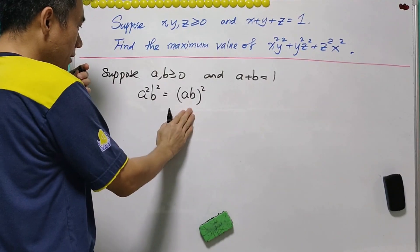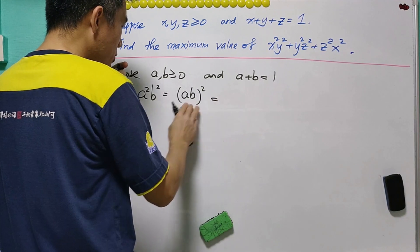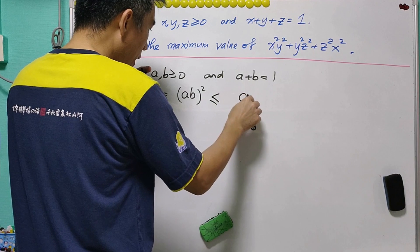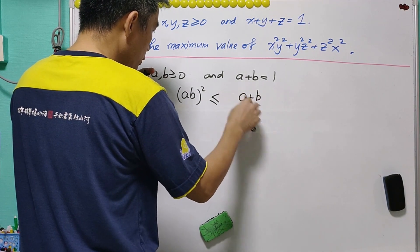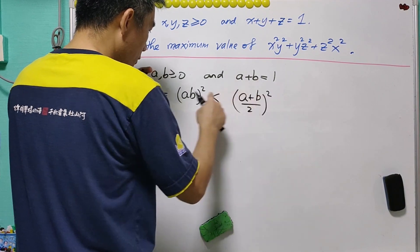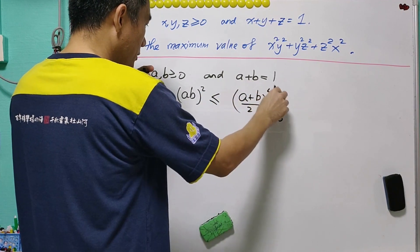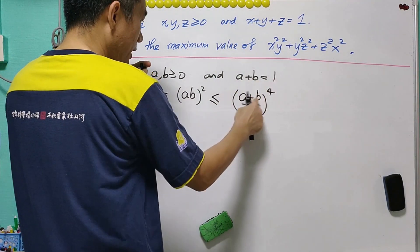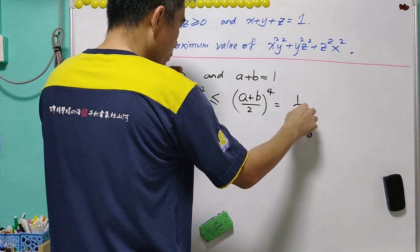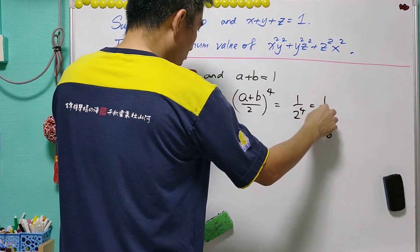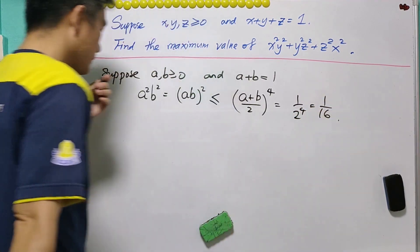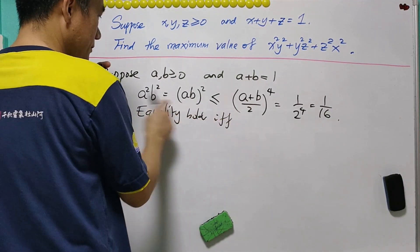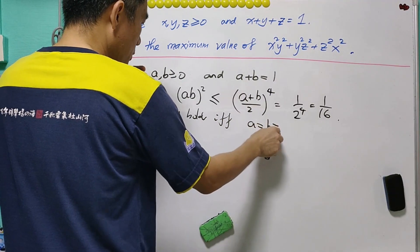a squared b squared equals ab squared. And from AM-GM inequality, ab will be less than or equal to a plus b over 2 squared. With the square, it becomes a power of 4. And we already know that the sum of a and b equals 1 and therefore this is 1 over 2 power 4. That is 1 over 16. Equality holds if and only if a equals b equals half.